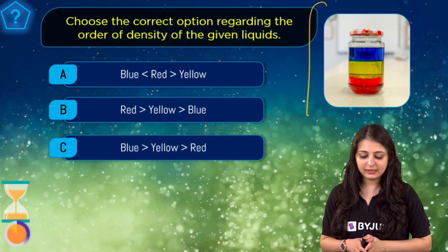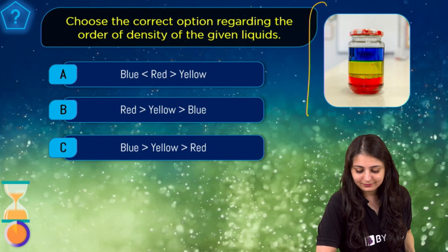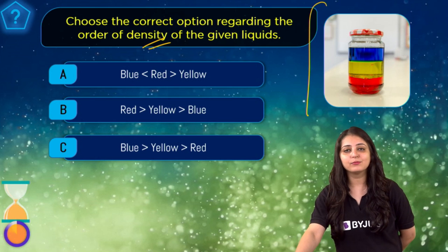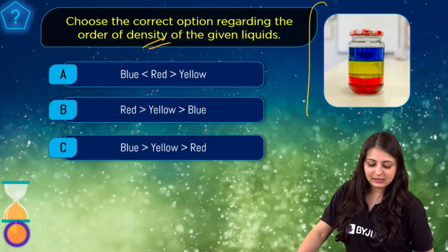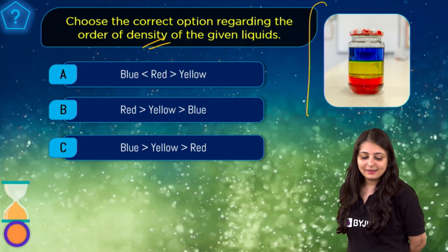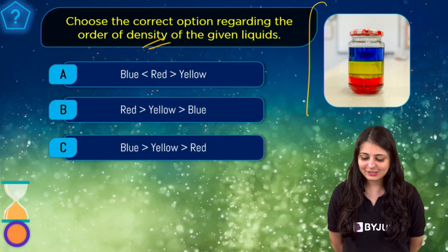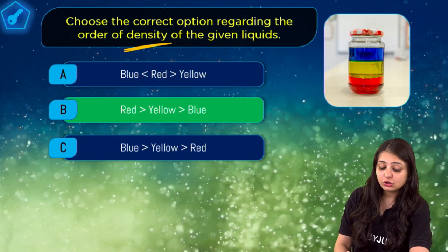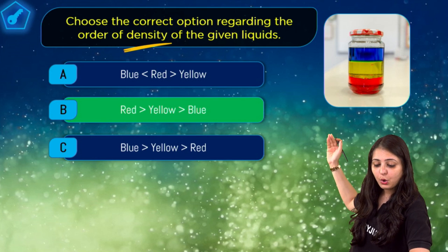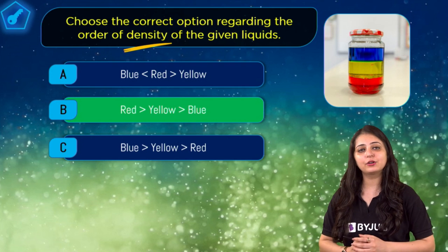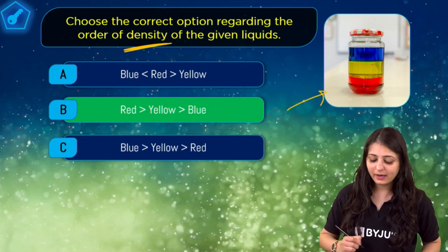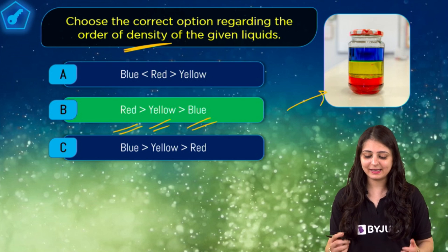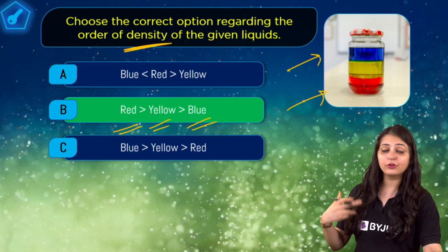Time is up! The correct answer is option B. The order of density: the bottom layer is the most dense liquid. The red liquid at the bottom is the densest, followed by yellow in the middle, and blue at the top is the least dense. That's why blue floats at the top — it is the least dense. This is how you check for density order.